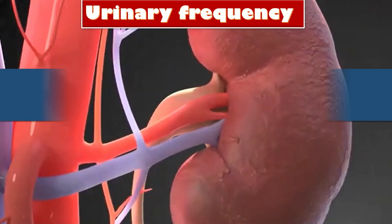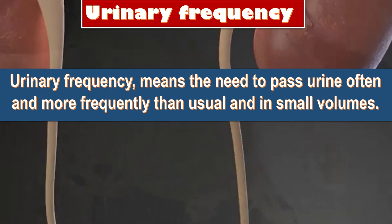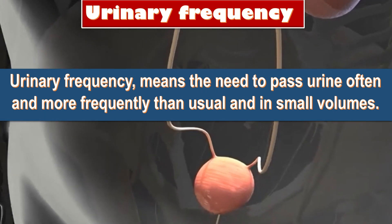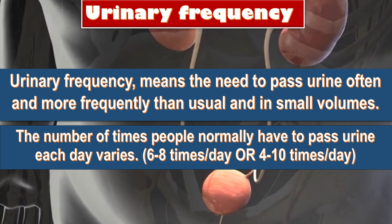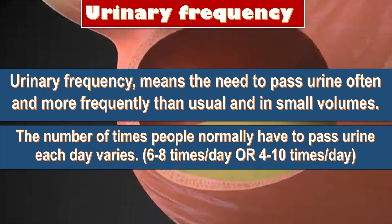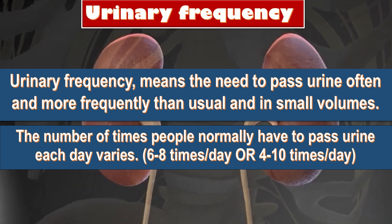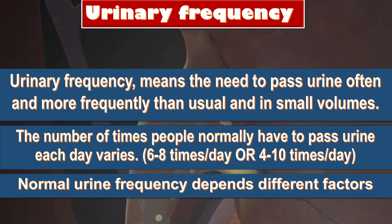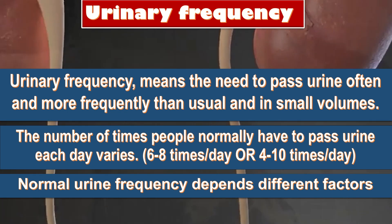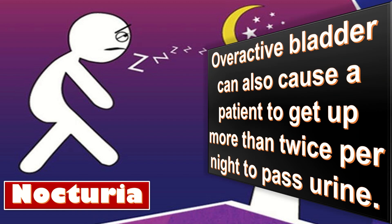Urinary frequency means the need to pass urine often and more frequently than usual, and in small volumes. The number of times people normally have to pass urine each day varies — it can be six to eight times per day or four to ten times per day. Normal urinary frequency depends upon several factors. Overactive bladder can also cause a patient to get up more than twice per night to pass urine, which is called nocturia.